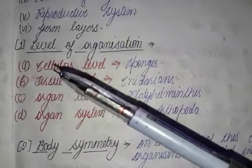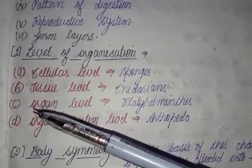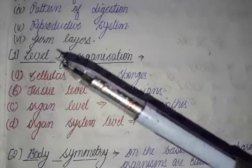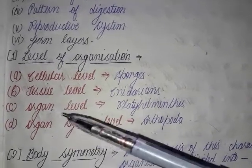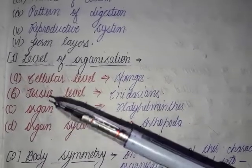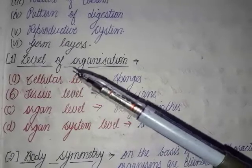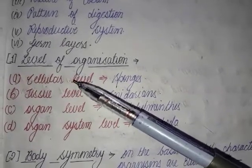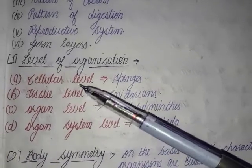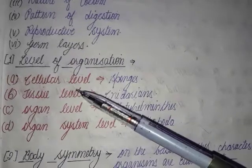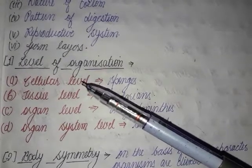Now coming to the level of organization. There are four levels of organization: the first is the cellular level of organization, tissue level of organization, organ level of organization, and organ system level of organization. In the cellular level of organization, the body consists of many cells but the cells do not form tissue. The body is made up of many cells but those cells do not arrange to form tissue. This type of organization is found in sponges.